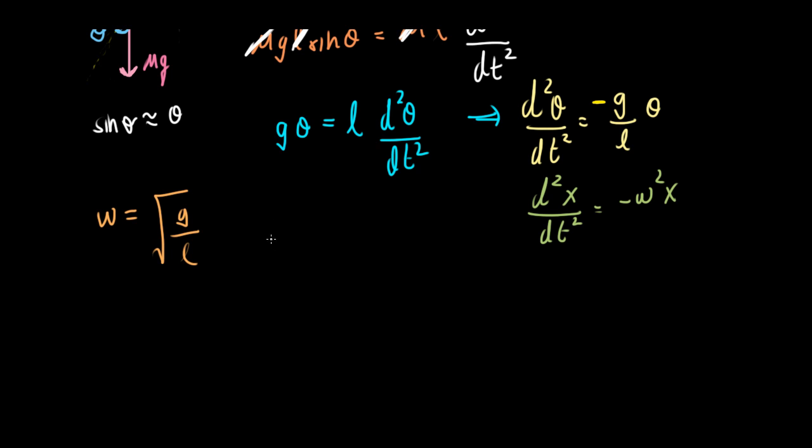So then what is the time period? The time period is 2π over ω, so this is 2π times the square root of L over g.